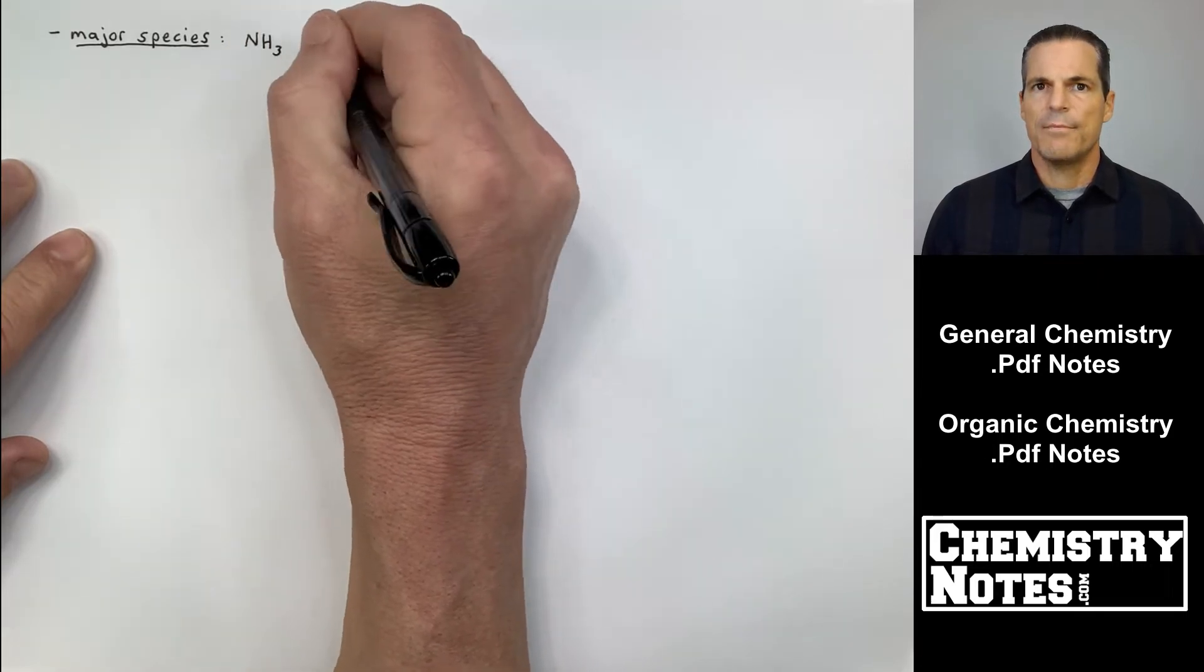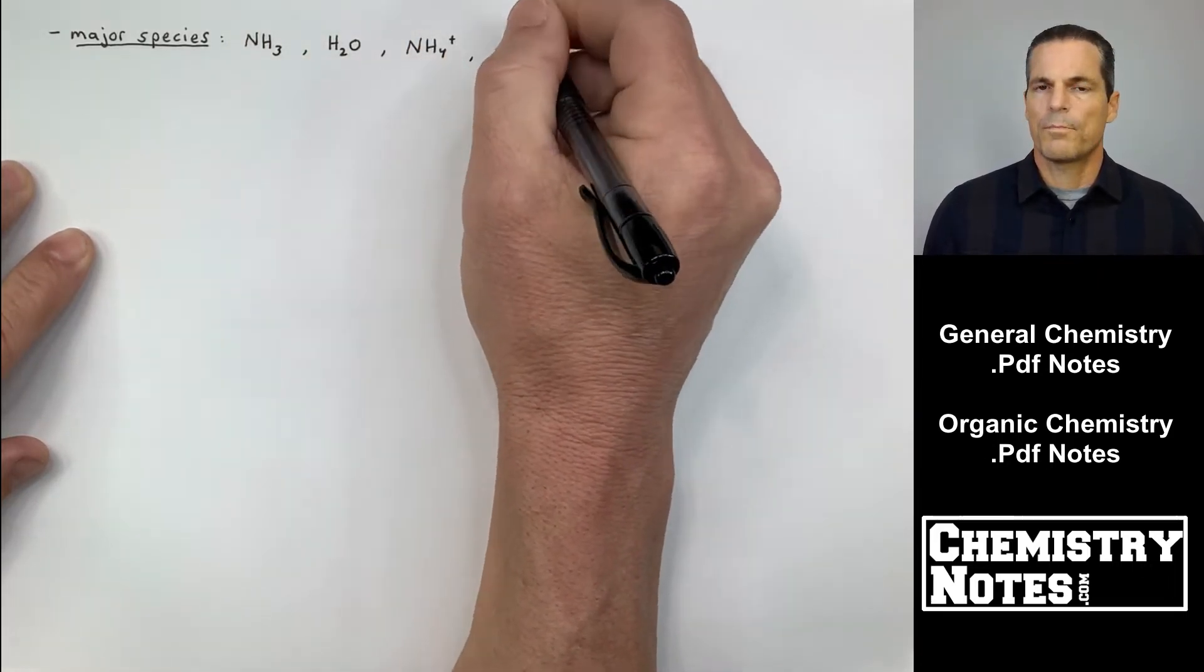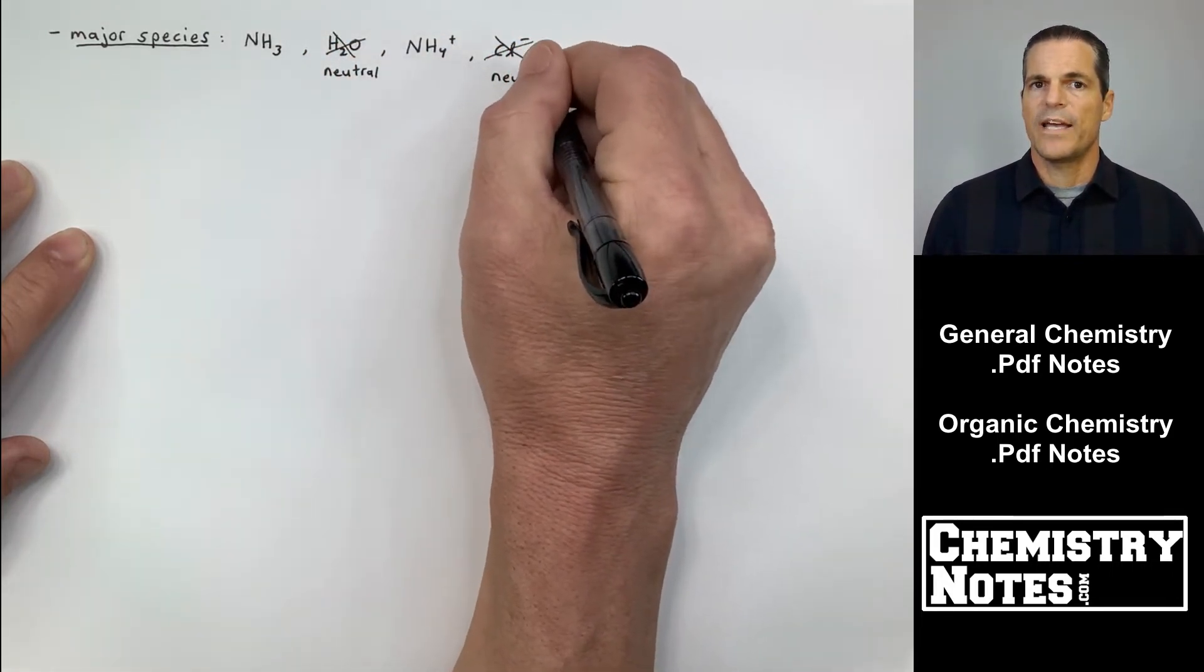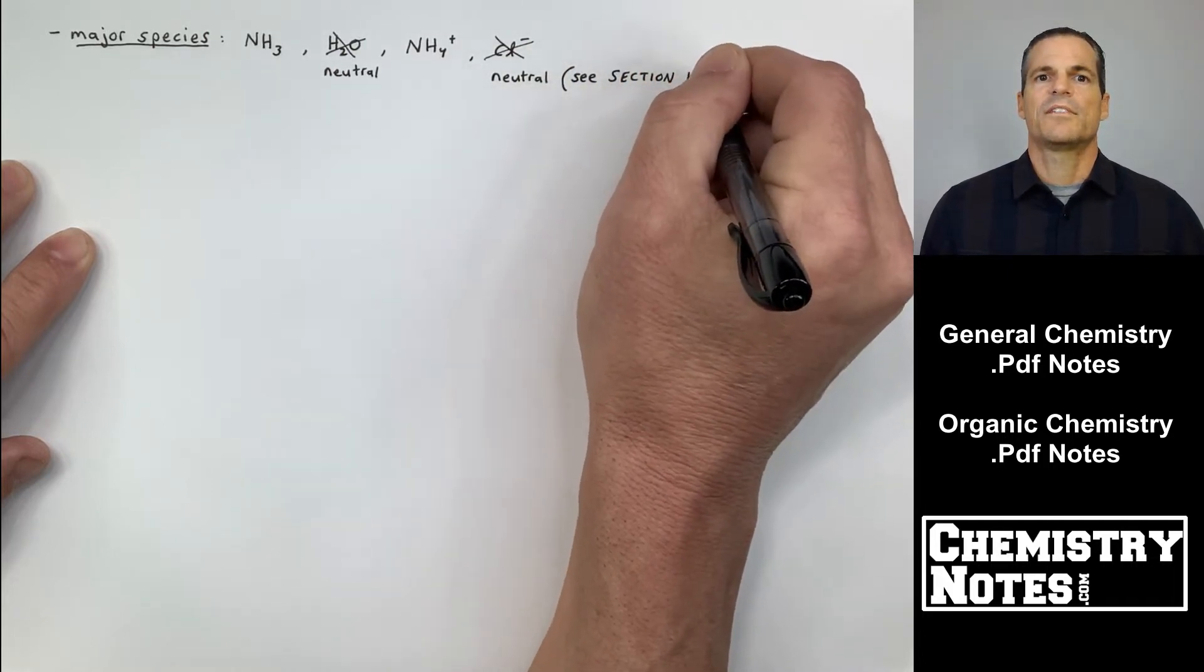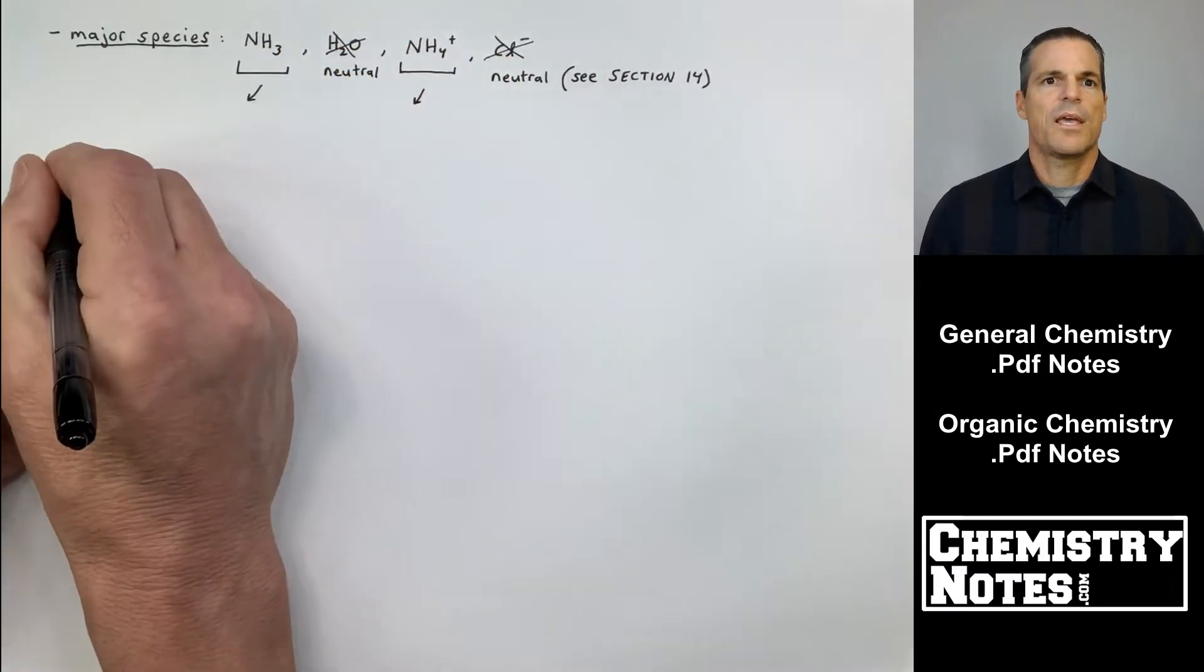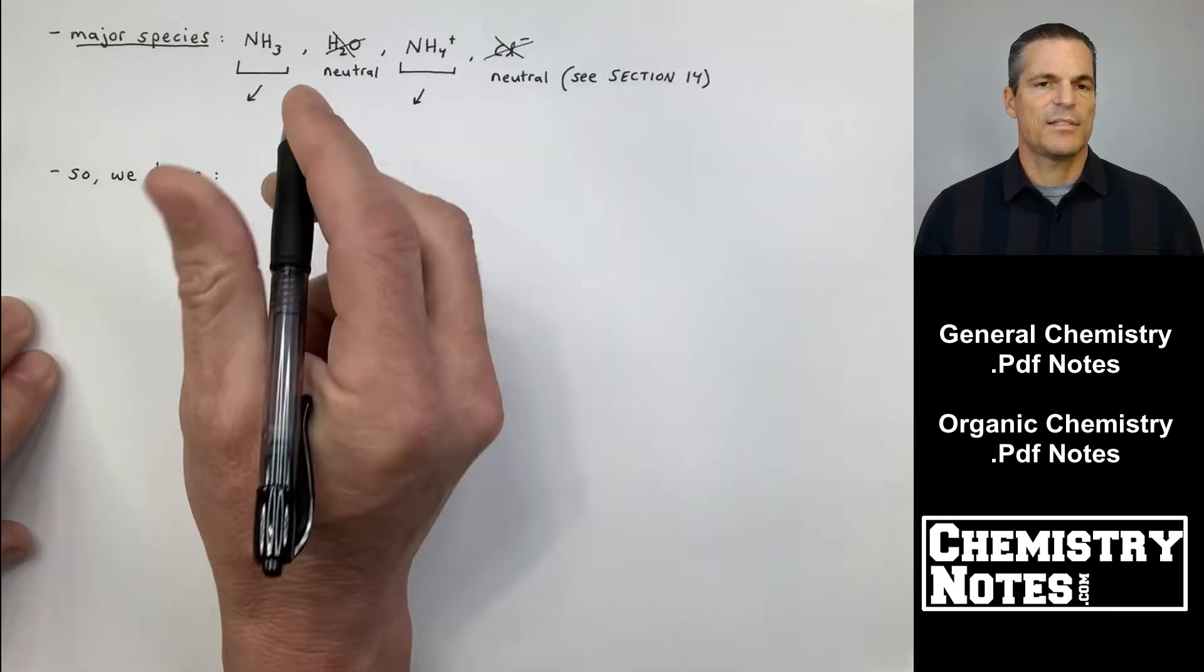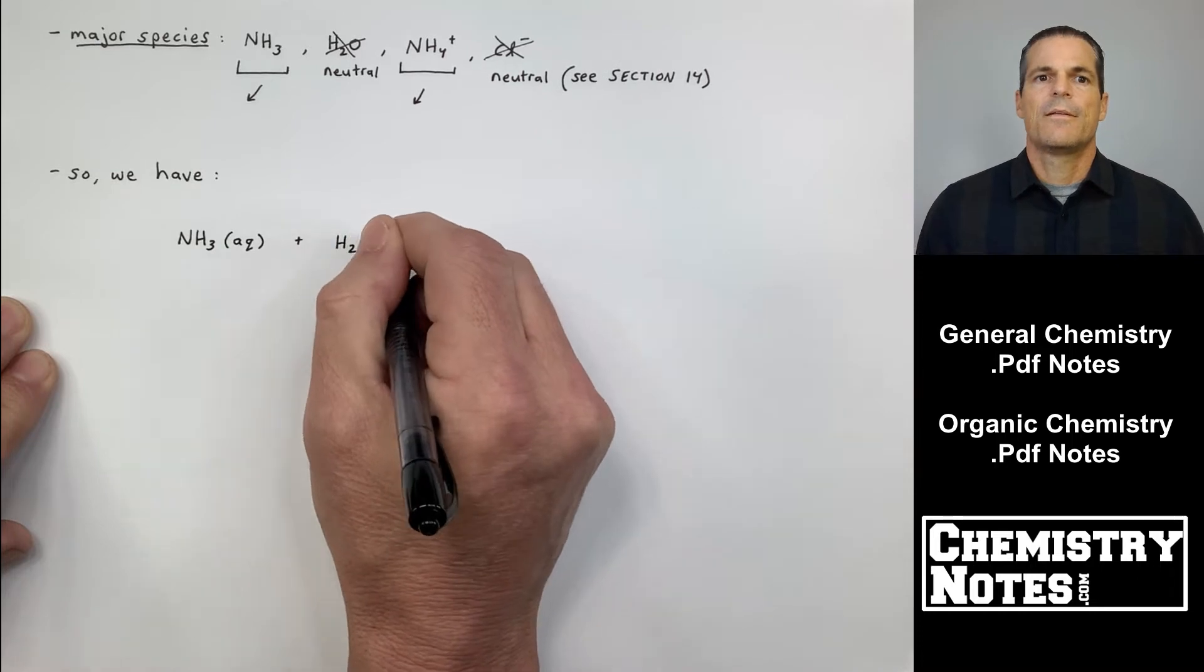We have NH3, we have H2O, we have NH4 plus, and we have Cl minus. That's because the salt, ammonium chloride, NH4Cl, is broken up. The Cl minus is neutral, and the water is neutral. And we learned why Cl minus, just like Na plus, is neutral in section 14. Go back and review that if you need to. But here's what we have.